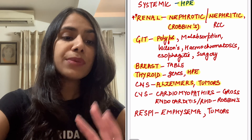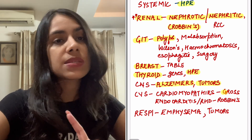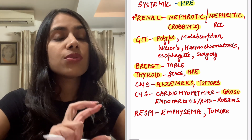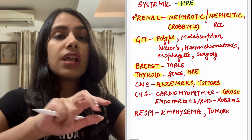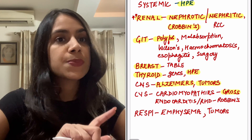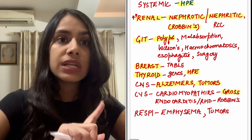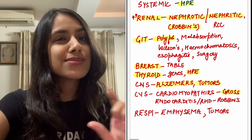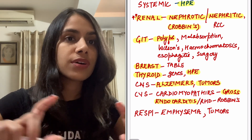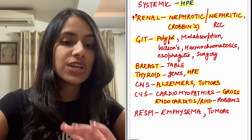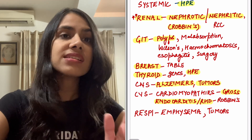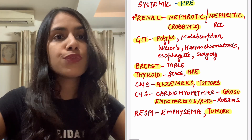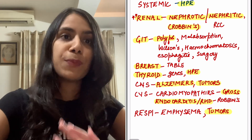Coming to CVS, gross specimens are being asked. So your cardiomyopathies, HOCM, MS, MR — look at all their gross specimens; they have also been covered in TBT. And also your endocarditis — Robbins has a beautiful table of the valves, so do check that out. Lastly coming to respiratory: tumors, their genes, and the entire table of lung tumors are very very important.